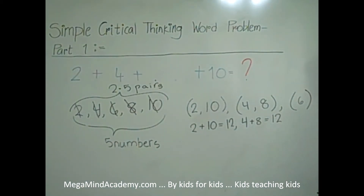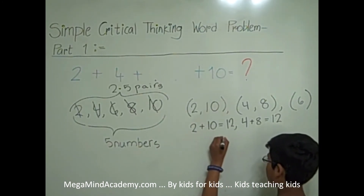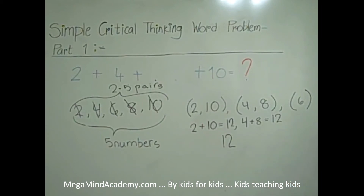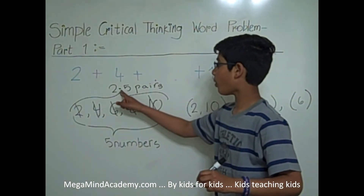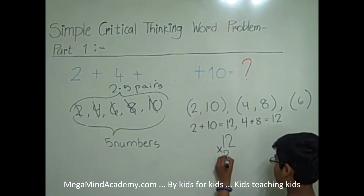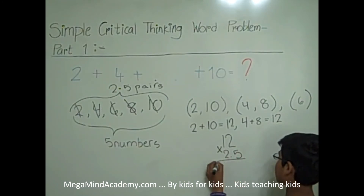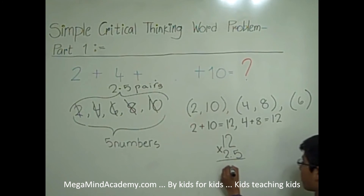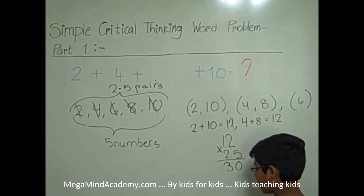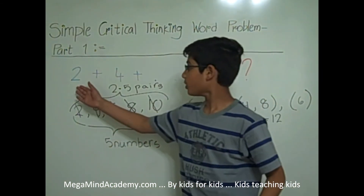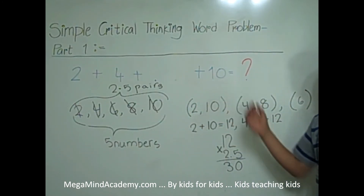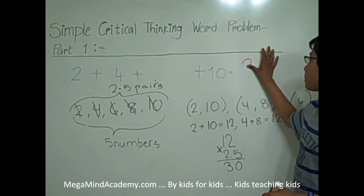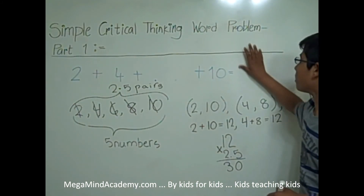To solve this problem, the last part we have to do is 12 — because it is the sum of each pair — times 2.5. We get 2.5 because it is the number of pairs. And we get 30. So the answer of 2 plus 4 plus dot dot dot plus 10 is equal to 30.